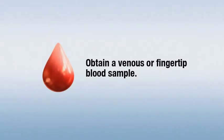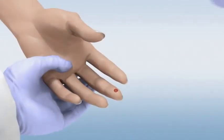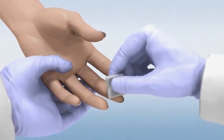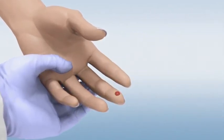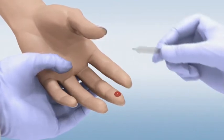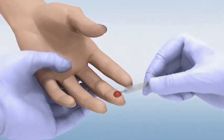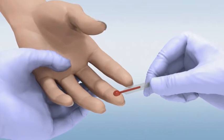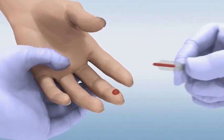Obtain a venous or fingertip blood sample according to your normal laboratory practices. If you're taking a sample from a fingertip, wipe away the first drop of blood after pricking the finger and sample from the second drop. Touch the micro safe tube to the drop of blood, allowing the tube to fill with blood up to the black fill line.